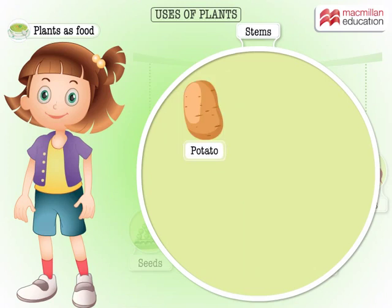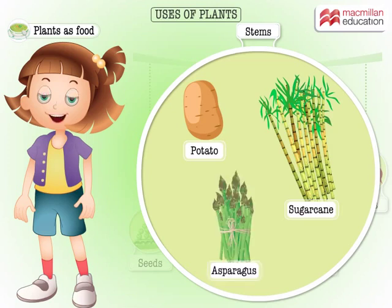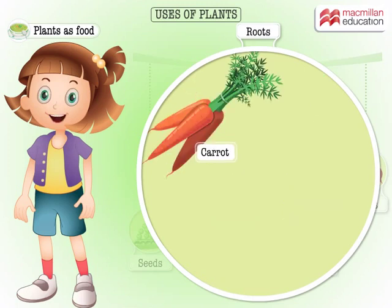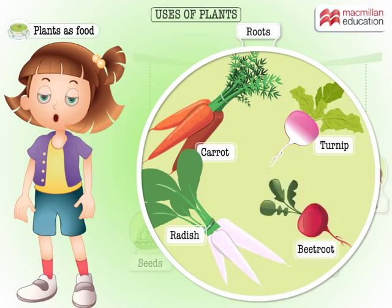Potato is a stem vegetable, and so are sugarcane and asparagus. Carrot, turnip, radish, and beetroot — these are the root vegetables.